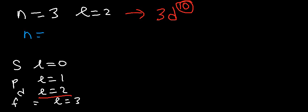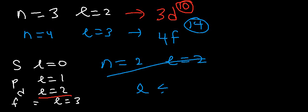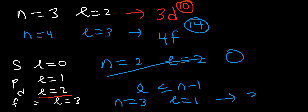For practice, if N is 4 and L is 3, this correlates to the 4F sublevel, and the F sublevel can have a maximum of 14. Now if N is 2 and L is 2, this is impossible — L has to be less than or equal to N minus 1. So when N is 2, L can be 0 or 1, it can't be 2. If you have quantum numbers that are not allowed, the answer is 0. If N is 3 and L is 1, this correlates to the 3P sublevel, and there are 6 electrons that can have those two quantum numbers.